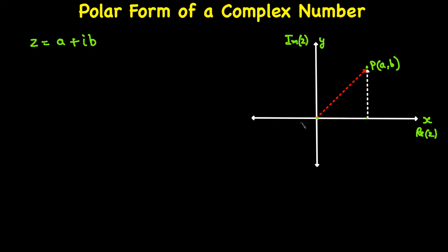The origin is O, and this point is P, so the length OP is R. The length OR equals a, the real part, and PR equals B, the imaginary part. The angle theta is the angle between OP and the positive X-axis — this is called the argument of the complex number. The vector OP is called the modulus of the complex number, written as |Z|, also represented as R.